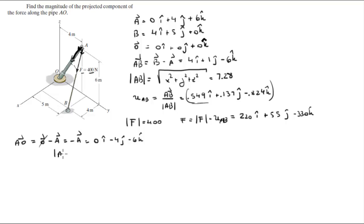The magnitude of AO is found with the same formula: x squared plus y squared plus z squared all square rooted, and it comes out to be 7.21.